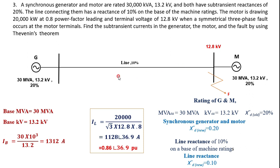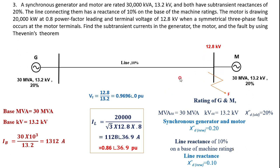The pre-fault voltage is 12.8 kV — before the fault occurs, the system is delivering load current at this voltage. Expressing this in per unit by dividing by the base voltage of 13.2 kV and taking it as reference at angle 0°, the pre-fault voltage is 0.9696∠0° per unit at the motor terminals.